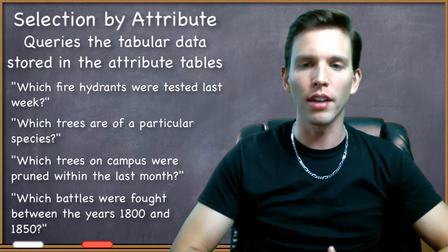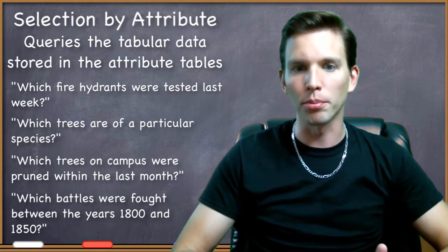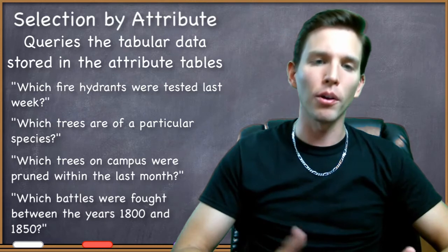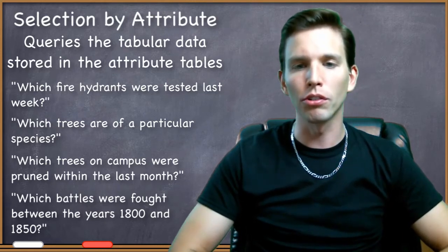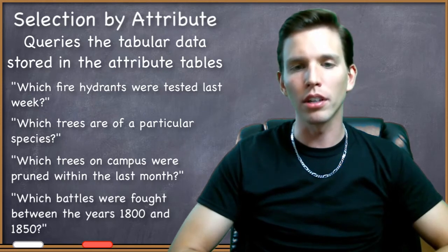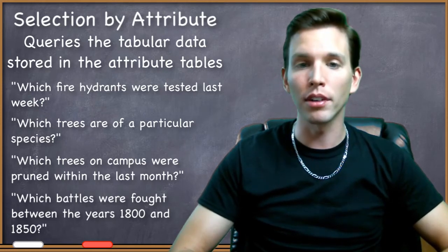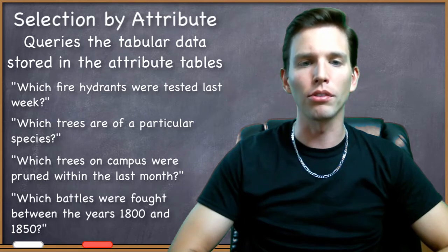I can quickly get answers to questions like this because that's precisely the kind of information that's stored in attribute tables. Plus, remember that there's that link between the geometry and the attributes in the data tables—that's the fundamental part of the vector data model.